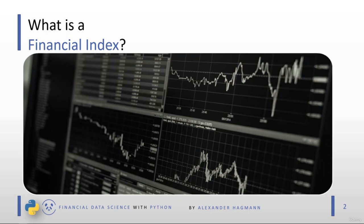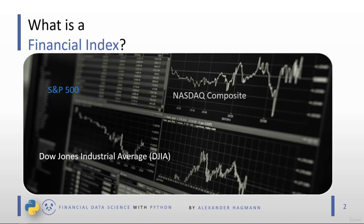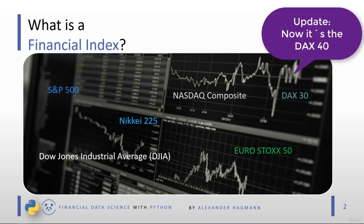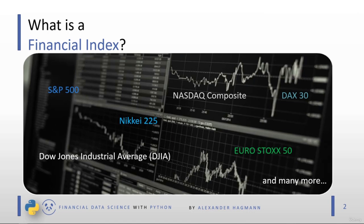There are many examples of financial indexes. The Dow Jones Industrial Average measures the performance of 30 large US stocks. The S&P 500 aggregates 500 large US stocks. The Nasdaq Composite is heavily weighted towards tech stocks. The Nikkei 225 contains 225 large Japanese stocks. The Eurostoxx 50 covers 50 large European stocks, and the DAX 30 includes 30 large German stocks. Beyond stock indexes, there are also fixed income, bond, and commodity indexes — so there is actually no restriction.